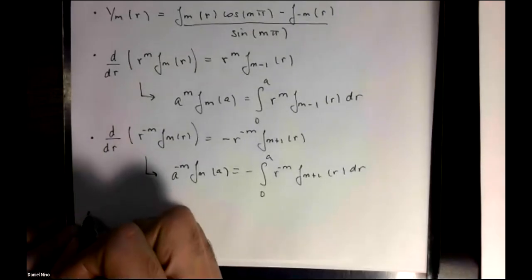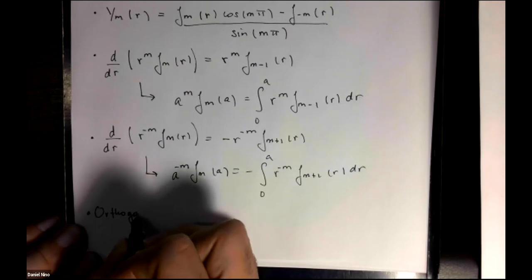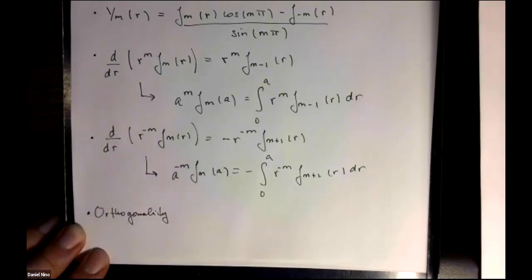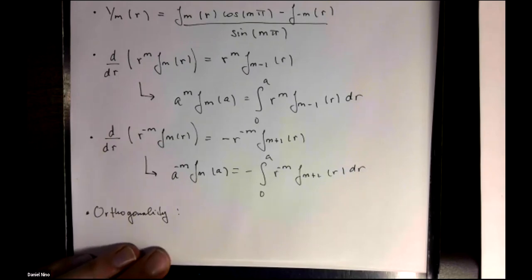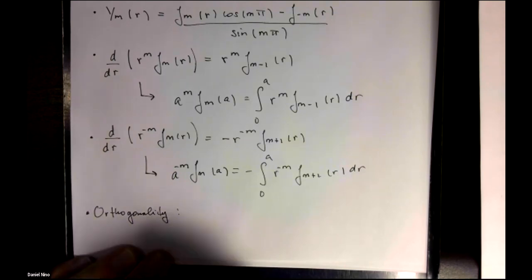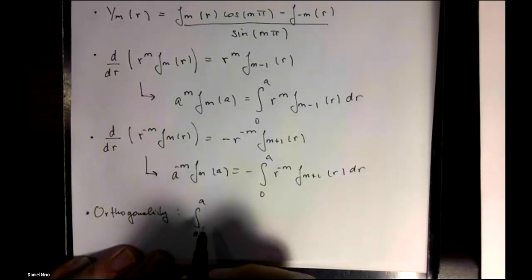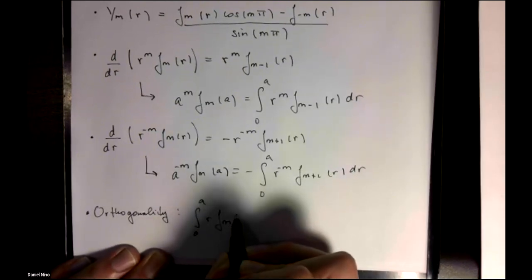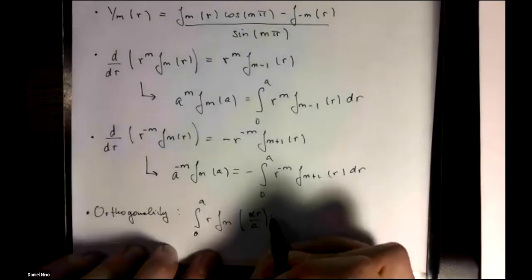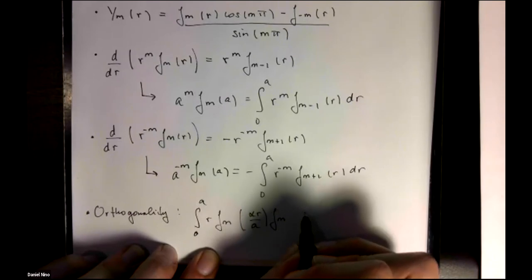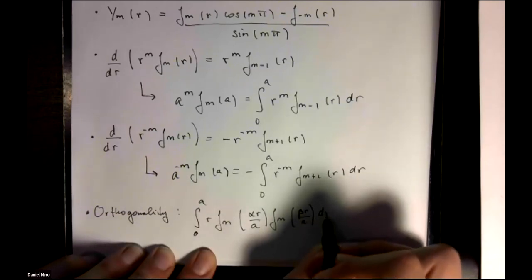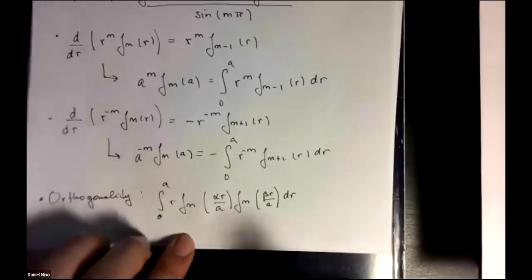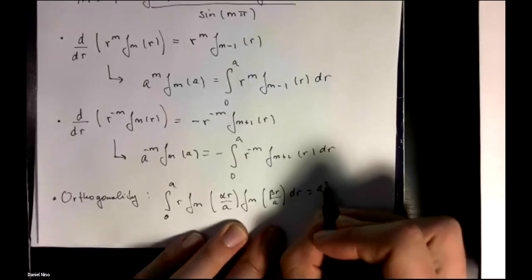Finally, the most important property for us is going to be the orthogonality of Bessel functions. Just like we had orthogonality for trigonometric functions, there's also an orthogonality characteristic to Bessel functions. And this says if you integrate from 0 to a the following quantity over dr, and this is equal to a squared over 2.